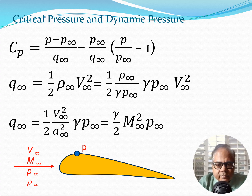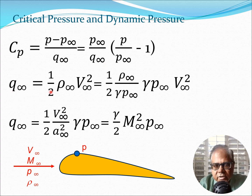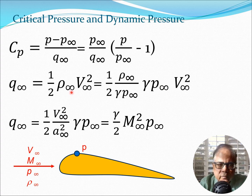We will now define a relationship for critical pressure using different definitions and isentropic flow equations. Starting with the definition of CP itself: CP = (P − P_∞) / Q_∞, where Q is the dynamic pressure. Rewriting algebraically, this becomes P/Q_∞ − P_∞/Q_∞. For Q_∞ we write it as (1/2)ρV², then divide numerator and denominator by γP_∞, which brings in the speed of sound formulation.